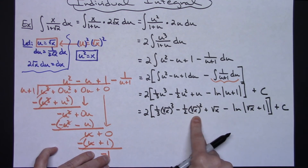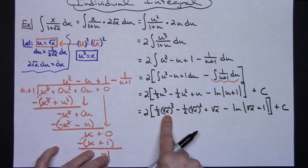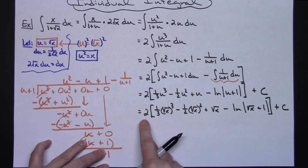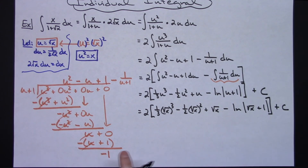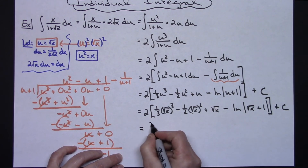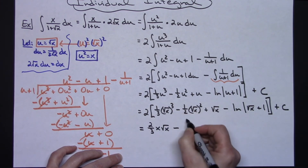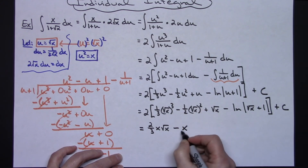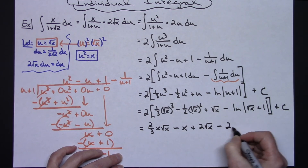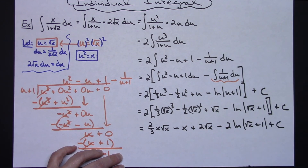Simplifying: (sqrt(x))^2 becomes x, and (sqrt(x))^3 simplifies to x*sqrt(x). Distributing the 2 to every term, the final answer is two-thirds x*sqrt(x) minus x plus 2*sqrt(x) minus 2*ln|sqrt(x)+1| plus C.